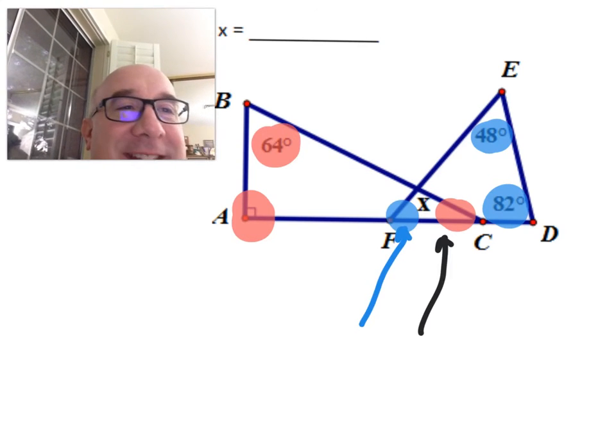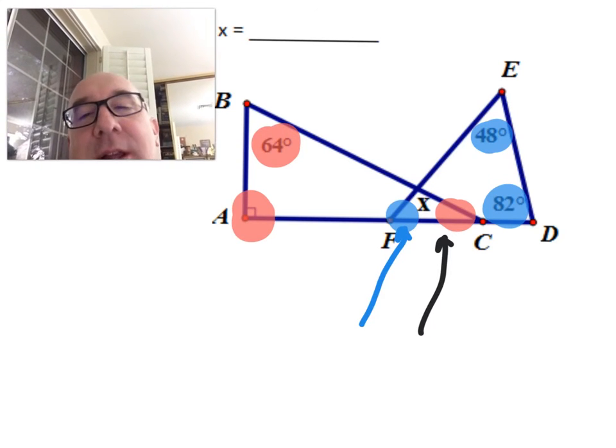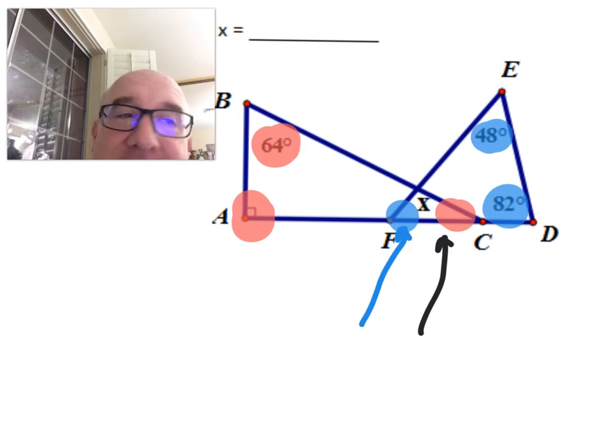Now the last step: if you know those two angles, X is the remaining angle in the tiny little triangle.